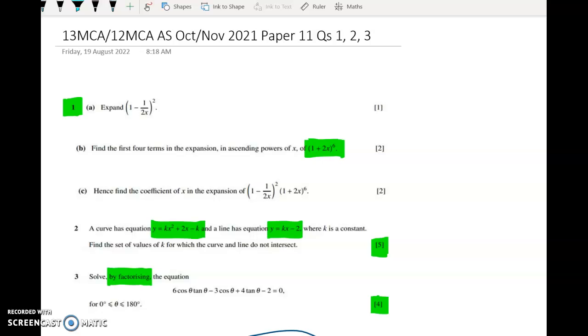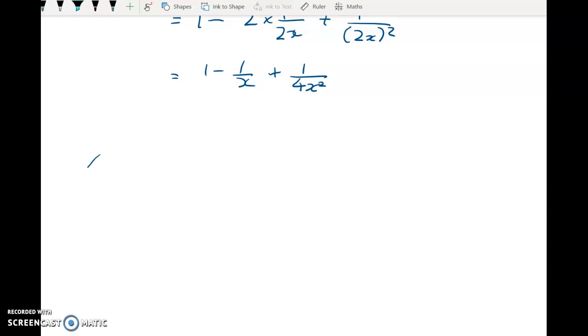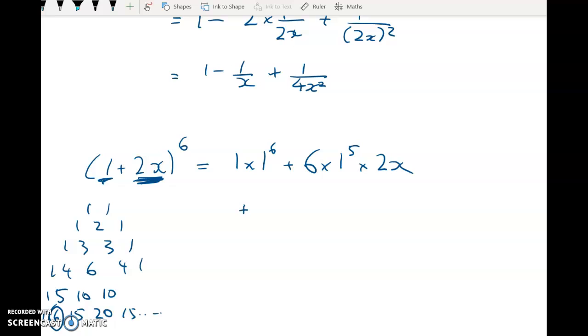Then we have to find the first four terms in the expansion in ascending powers of 1 plus 2x to the power of 6. So that's going to take coefficients from the sixth row of Pascal's triangle. For me, it's quicker to just scribble that down than to grab my calculator. Maybe different for you guys, but hopefully this is how most of you have done it. And then it's going to be 1 times this one, 1 to the power of 6, and this to the power of 0, plus 6 times 1 to the power of 5, times 2x to the power of 1. We just have to do the first four terms. So 15 times 1 to the power of 4, times 2x squared, plus 20 times 1 cubed, times 2x cubed. Cleaning that up gives me 1 plus 12x, plus 60x squared, plus 160x cubed.